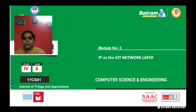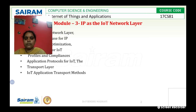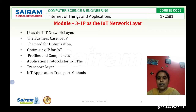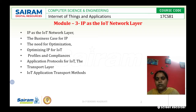Here is the outline of this module. The outline includes: IP as the IoT Network Layer, business case for IP, need for the optimization, optimizing IP for IoT, profiles and compliances, various application protocols, and the transport layer methods.